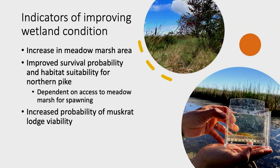When we think about restoration goals, we want to know what meaningful ecosystem improvement looks like. In response to a water level regulation plan that improves environmental conditions, we would want to see an increase in meadow marsh area, improved survival probability and habitat suitability for northern pike — who depend on access to meadow marsh for spawning — and an increased probability of muskrat lodge viability, meaning they are able to survive through the winter.